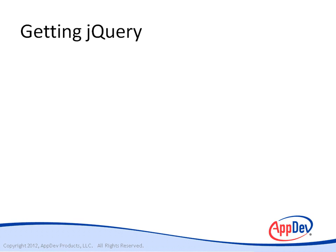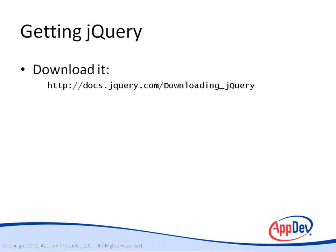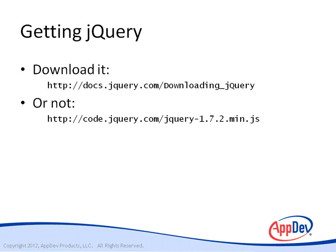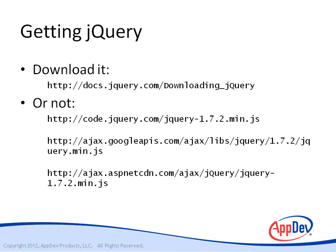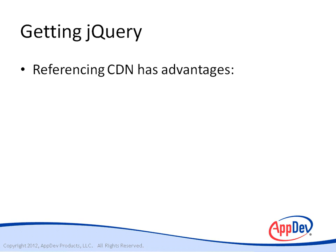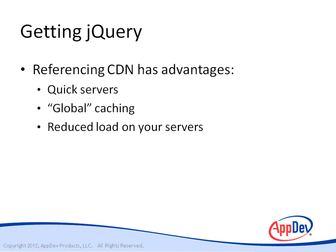Before diving into more jQuery, let's find out how to get it and set it up. When using jQuery we essentially have two choices: we can download it to our own systems and serve it ourselves, or we can reference it from our pages using one of the popular content delivery networks. jQuery is available from the jQuery-maintained CDN, the Google CDN, and the Microsoft CDN. Using a CDN has a few advantages — the servers used for CDNs are stout, and if the end user has visited a site that also uses the same CDN, the jQuery script file will already be cached on the user's system.